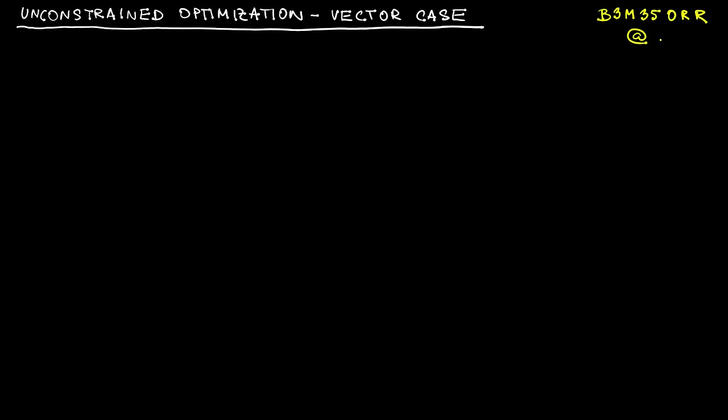Hi, welcome to a continuation of an introduction to unconstrained optimization. In particular, we are going to extend the results that we have derived for scalar functions of scalar arguments to the situation of scalar functions of vector arguments.